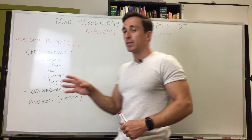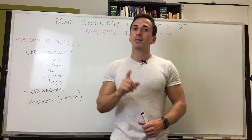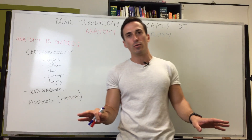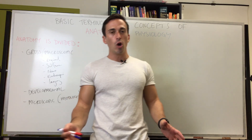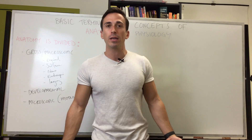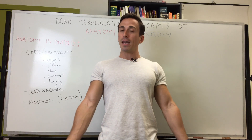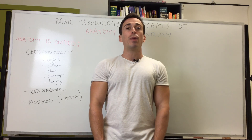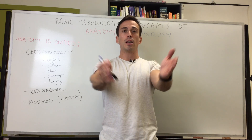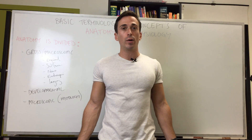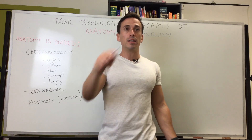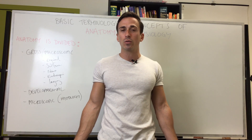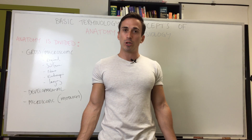When we start to describe anatomical terms, you need to realize that we're always referring to the patient or the human body being in what's called the anatomical position. The anatomical position is: feet shoulder-width apart, toes facing forwards, hands by the side, palms facing forwards, and the head and eyes facing forwards as well. You'll always describe anatomical and physiological terms in regards to this anatomical position.